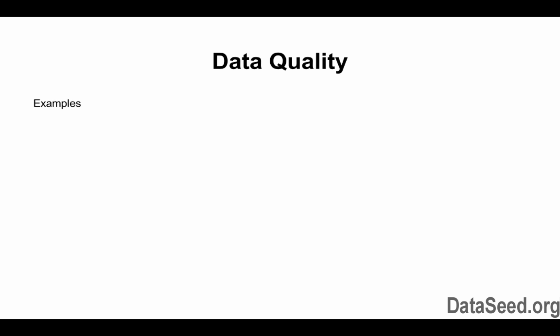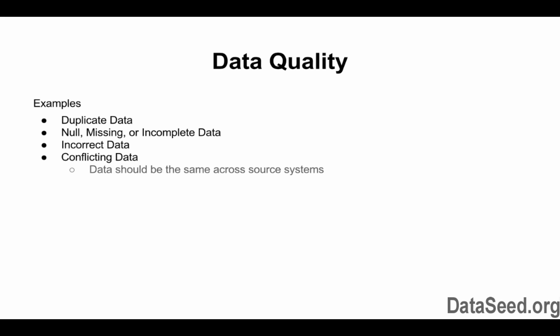Let's talk about data quality, and we'll define it by giving some examples of what would not constitute good data quality. That would include duplicate data or duplicate records, null, missing, or incomplete data, incorrect data, and data that conflicts across source systems.